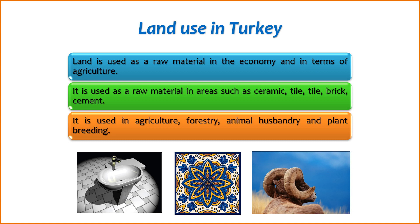5. Urbanization — Residential, commercial, and industrial development. Land is used for urban development, including the construction of residential, commercial, and industrial areas. Urban planning involves allocating land for various purposes to meet the needs of growing populations.